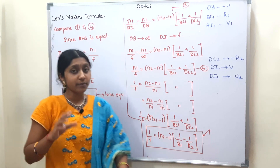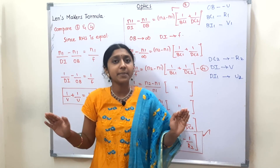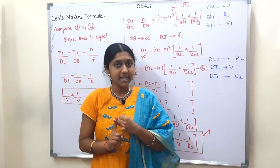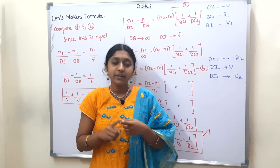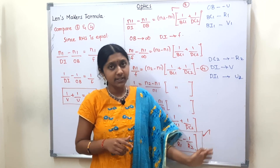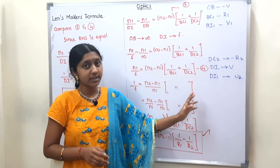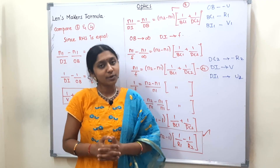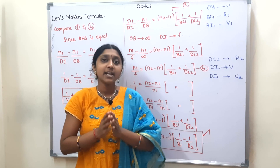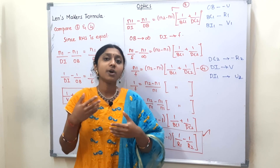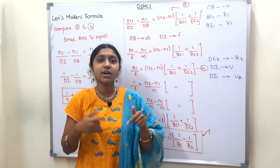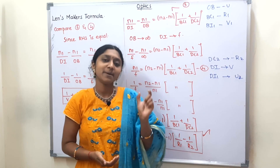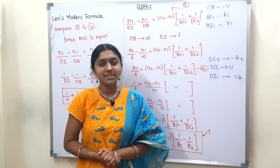We have completed the derivation. This is one of the most important and easy derivations. To summarize: apply refraction through spherical surfaces for surface ABC and surface ADC to get two formulas, add them, substitute object at infinity and image at focal length, then compare equations 3 and 4 to get the Lens Equation. If you found this helpful, please give a thumbs up and share with friends. Our channel is absolutely free for physics and chemistry. Subscribe and check the playlist in the description. We will see you in the next video — till then, stay tuned, bye!